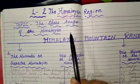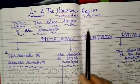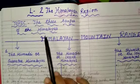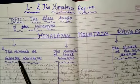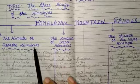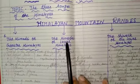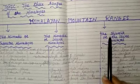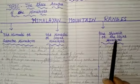The Himalayan mountain ranges are divided into three important ranges. The three important ranges of the Himalayas are: the Himadri, or the Greater Himalayas; the Himachal, or the Lesser Himalayas; and the third range is the Shivalik, or the Lower Himalayas.